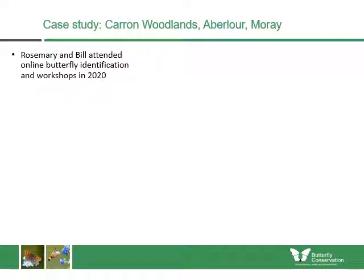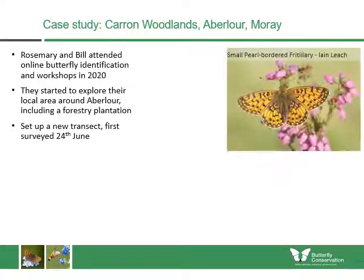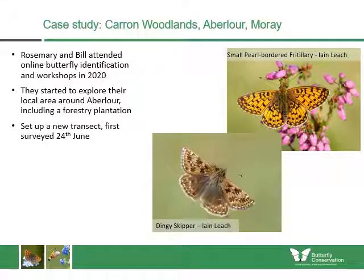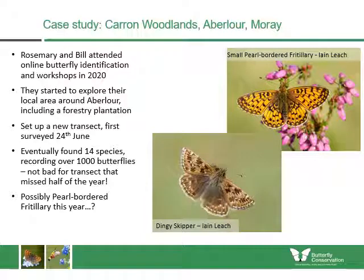Another case study is from Karen Woodlands in Aberlour, Morayshire, walked by Rosemary and Bill. They attended an online butterfly ID workshop in 2020, explored their local area, and found a forestry plantation with no existing transect. I helped them set up their own transect mapped on the UK BMS website. In their first week they found small pearl-bordered fritillaries and dingy skippers — an extremely rare butterfly and a priority for monitoring in Scotland. They eventually found 14 species and recorded over a thousand butterflies in their first year, which only ran for half the year.